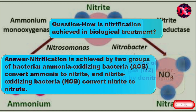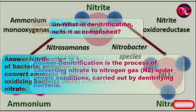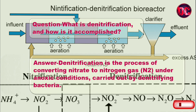Question: What is denitrification, and how is it accomplished? Answer: Denitrification is the process of converting nitrate to nitrogen gas (N2) under anoxic conditions, carried out by denitrifying bacteria.